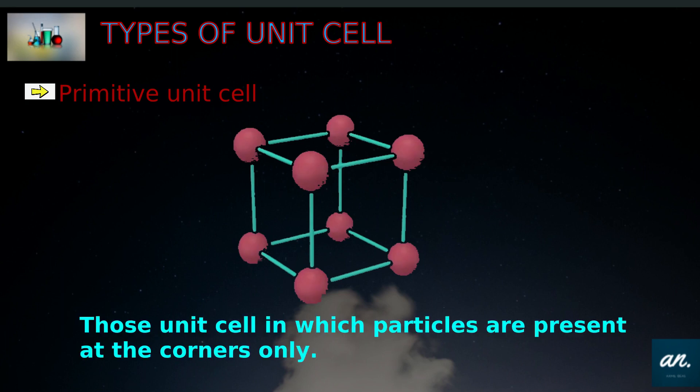The definition: those unit cells in which particles are present at the corners only. This is the primitive or simple unit cell.